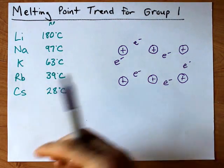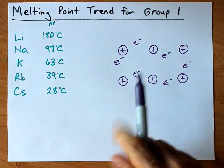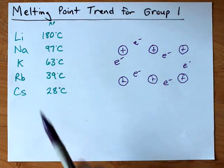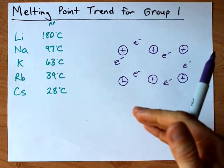Now, cesium is a large atom and still only gives us one valence electron because it's an alkali metal. Lithium is a small atom and gives up one electron as well.